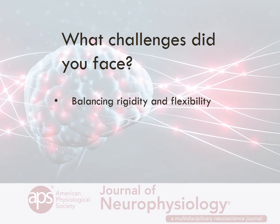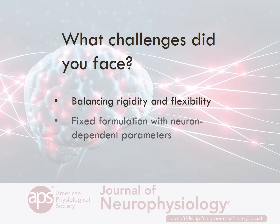So a useful model must be flexible enough to cover such diverse neurons. We resolved these issues by setting up a fixed mathematical formulation of the divisive normalization model — we can only modify its parameters, but we cannot modify the mathematical formulation itself. These parameters are fixed for a given individual neuron, but they can be modified to represent another neuron with different response properties.